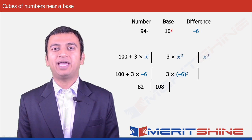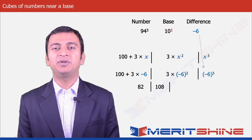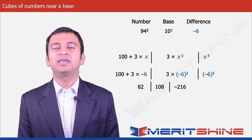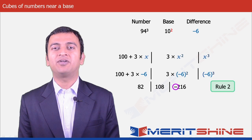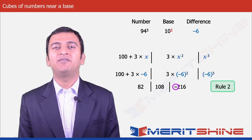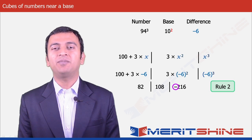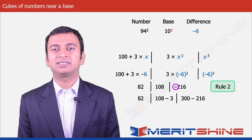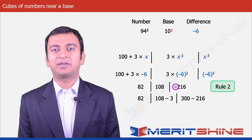And the third part would be x³, which in our case is (−6)³, giving us minus 216. Here comes our second rule, which says none of our parts can be negative. To make minus 216 positive, we will have to borrow 3 from 108, making it 108 minus 3 = 105 in the second part.